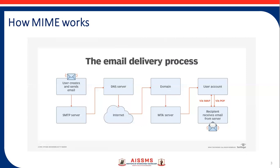MIME transforms non-ASCII data to 7-bit Network Virtual Terminal (NVT) data, and 7-bit ASCII can represent 128 characters. MIME then delivers this transformed data to the client SMTP. At the recipient end, the message is transferred back to the original data, allowing them to see its content, which may be audio, video, or some other kind of data.